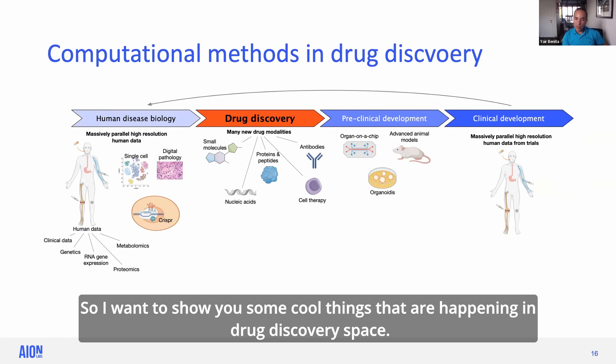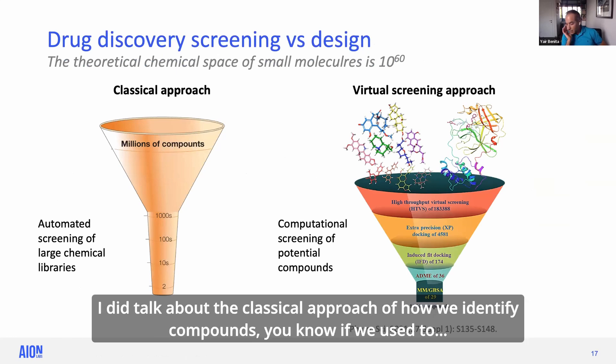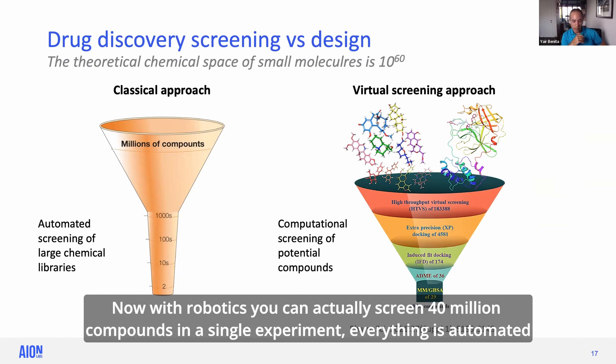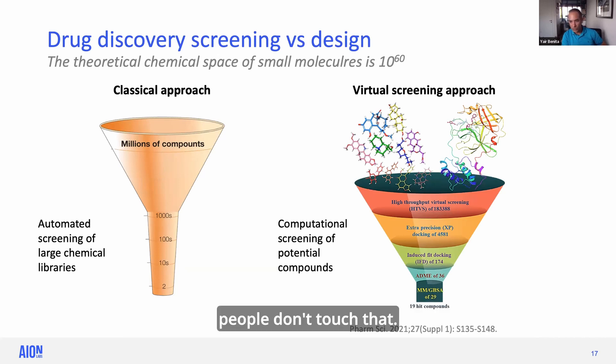So I want to show you some cool things that are happening in drug discovery space. I did talk about the classical approach of how we identify compounds. Now with robotics, you can actually screen 40 million compounds in a single experiment. Everything is automated. People don't touch that.